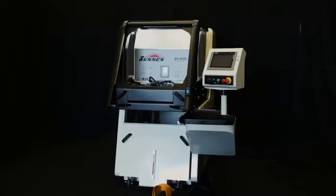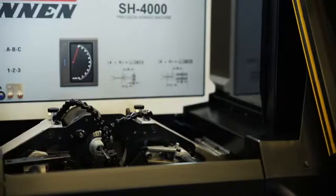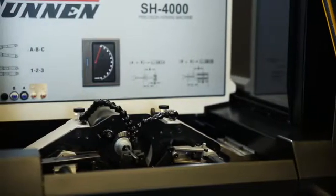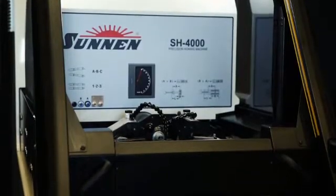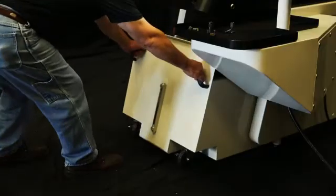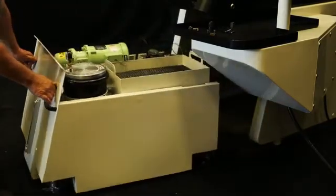This is the introduction to the Sonnen SH-4000 horizontal honing machine. Let's begin by pointing out the coolant cart connections. First, remove the coolant cart by pulling on the two handles on the front of the cart. In the coolant cart are the following: